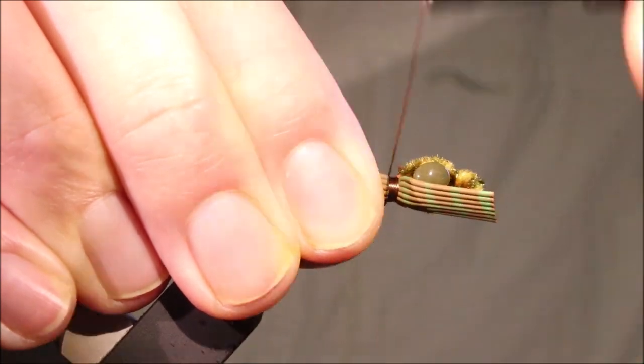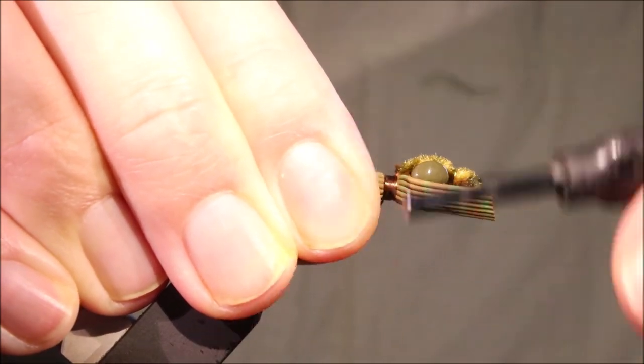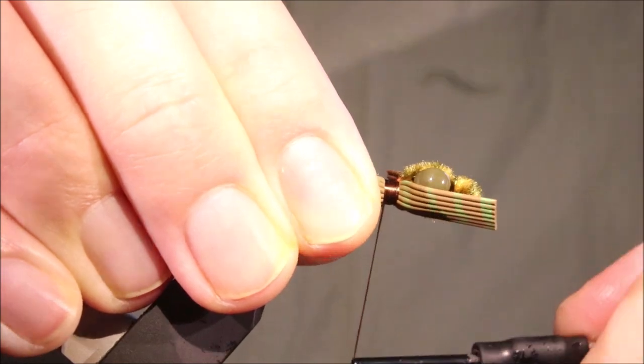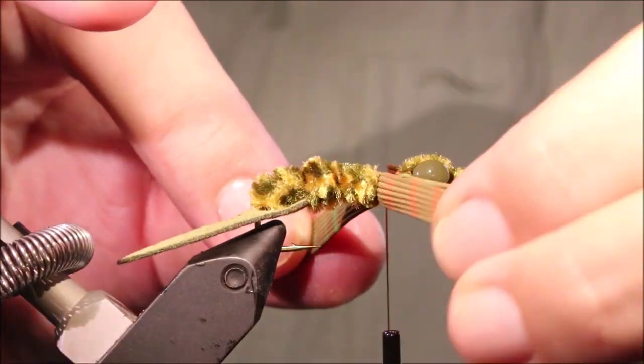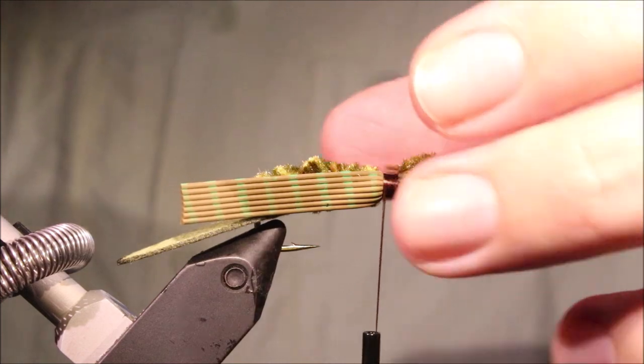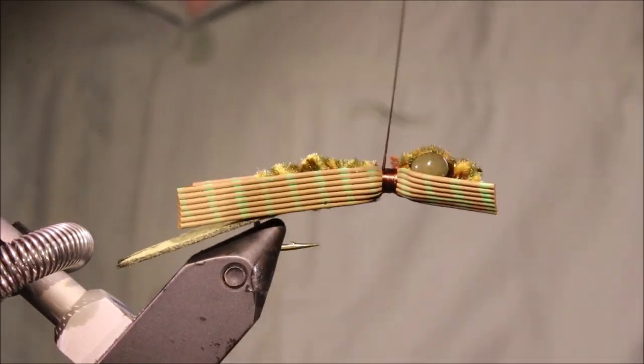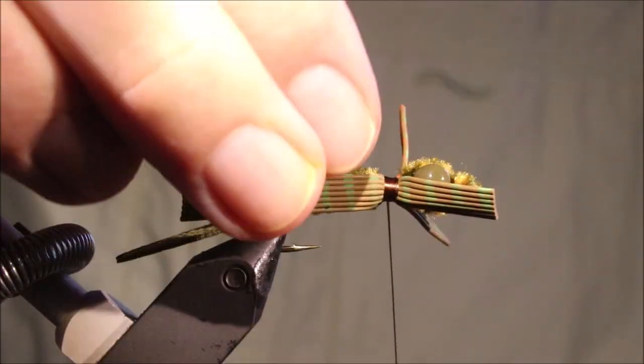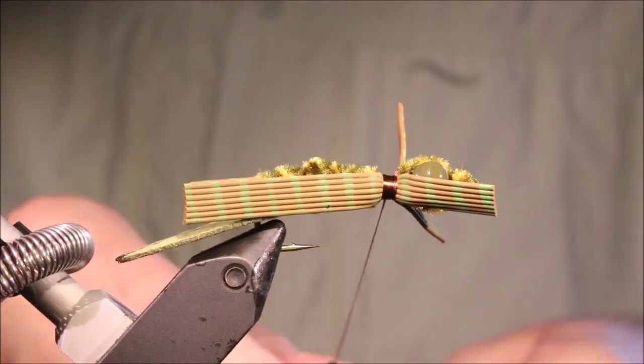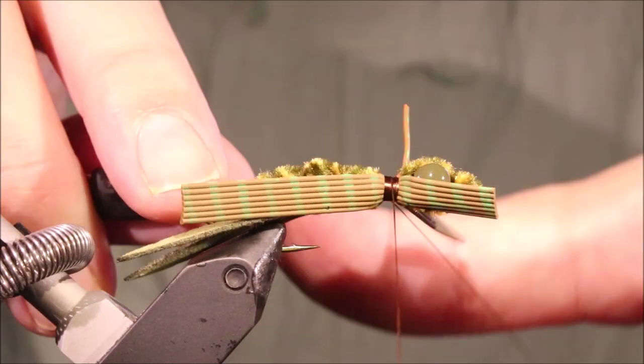And then, line back, and touching turns, and stop just shy, I've still got a couple of wee turns of thread there, just shy of the chenille, and it should be the same at this side as well, it's not hard against the eyes, and then it's just a case of whip finishing.